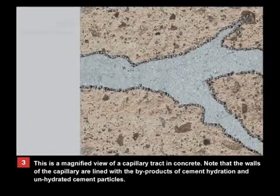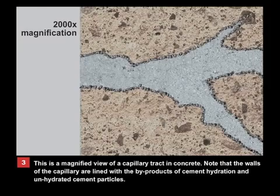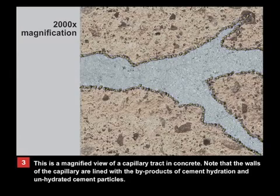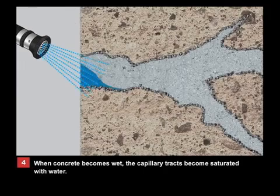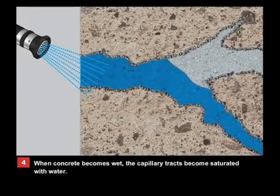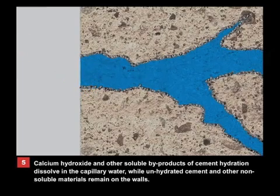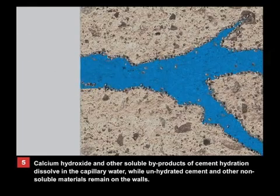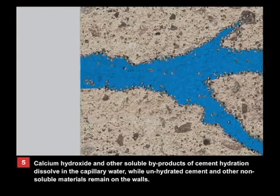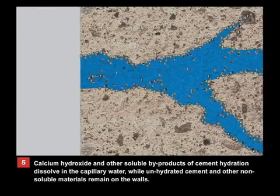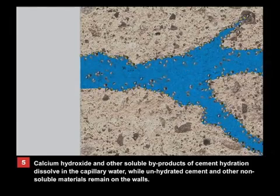This is a magnified view of a capillary tract in concrete. Note that the walls of the capillary are lined with the byproducts of cement hydration and unhydrated cement particles. When concrete is wet, the capillary tracts become saturated with water. Calcium hydroxide and other soluble byproducts of cement hydration dissolve in the capillary water, while unhydrated cement and other non-soluble materials remain on the walls.